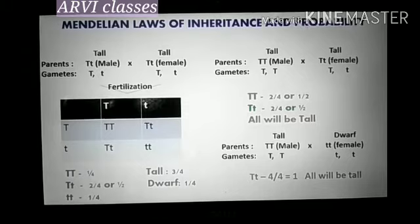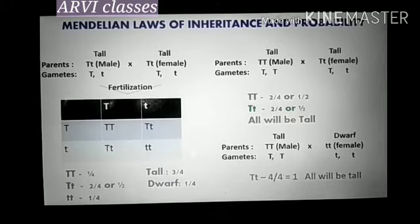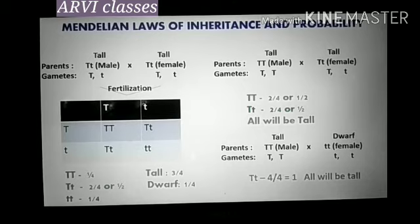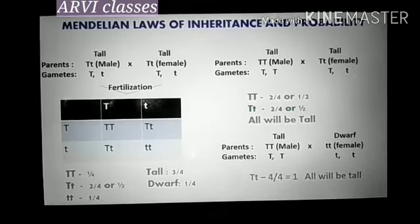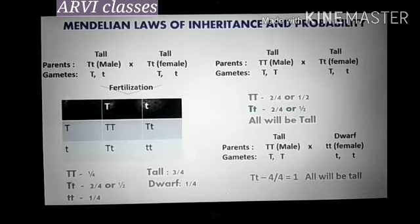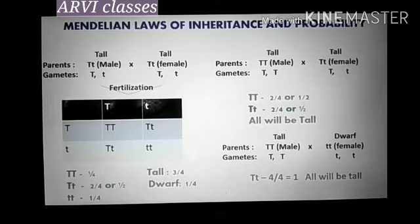Before going into detail of the topic, first we would like to understand the Mendelian law of inheritance. Here on the screen, we are seeing the monohybrid cross. In a monohybrid cross, we take up one gene for a character. Here we have taken the character of height.